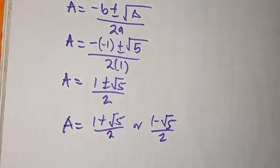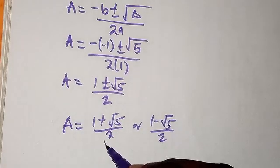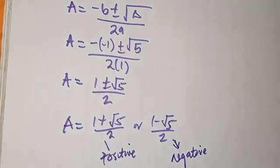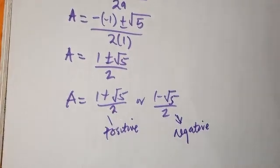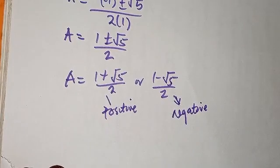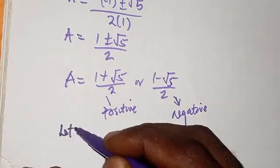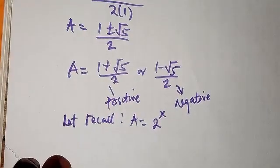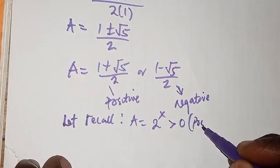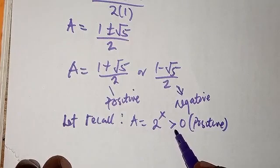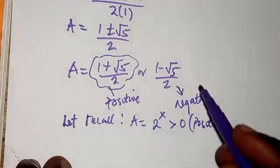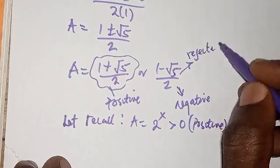We now have two values. The first, (1 + √5)/2, is positive, while the second, (1 − √5)/2, is negative. We need to take note of that. Recalling that a equals 2 to the power x, this expression is always greater than 0 — that is, always positive. Since a must be greater than 0, we reject the negative value and pick only the positive one.